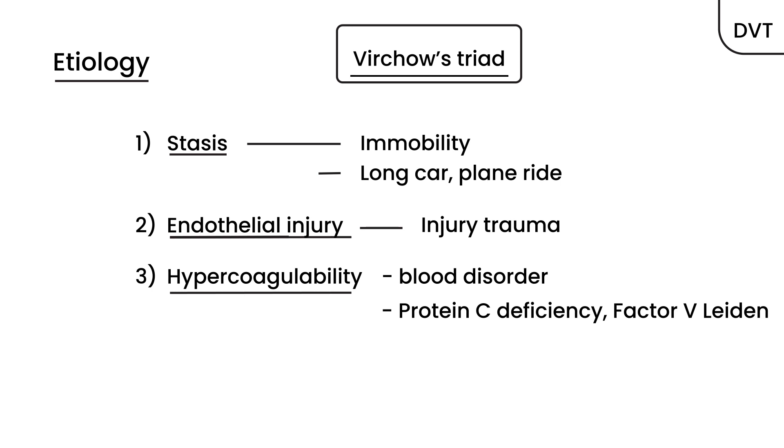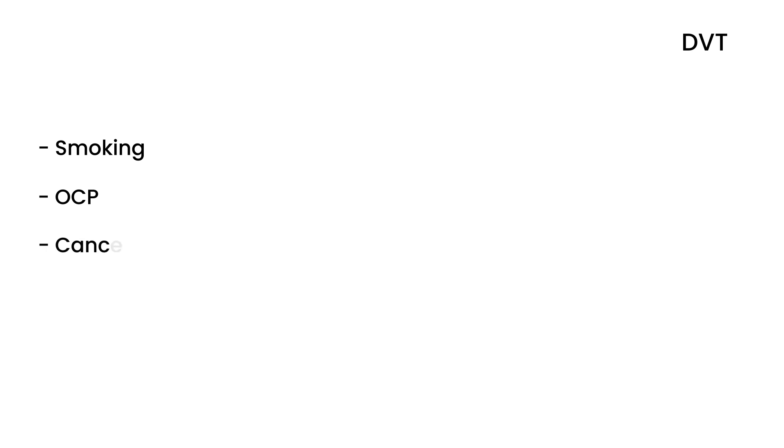These three things together are known as Virchow's triad — very important to remember. There are also a few other reasons that can increase a person's chance of developing DVT, including smoking, oral contraceptive pills, hormone contraceptives, cancer, and pregnancy. These can also increase the risk of developing blood clots in the lower extremities.